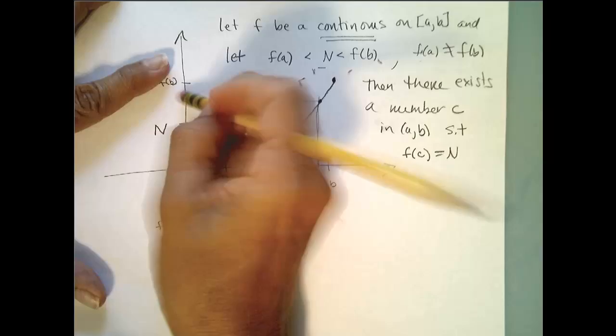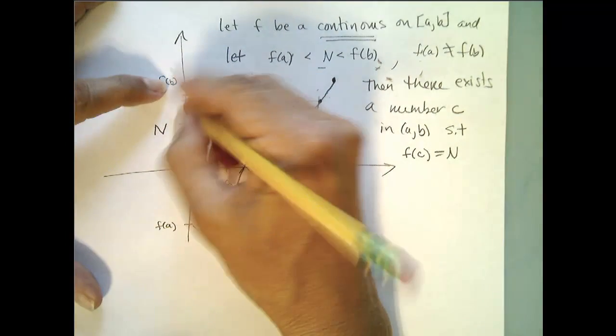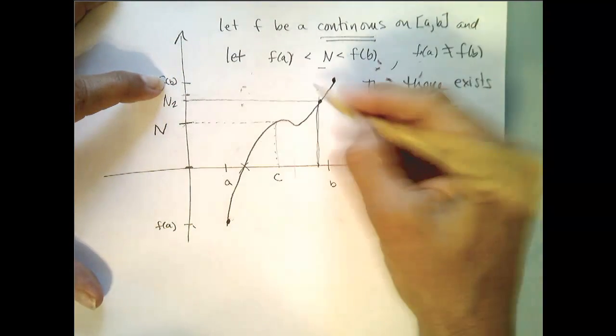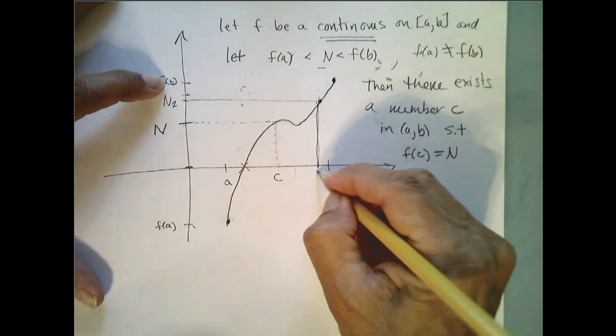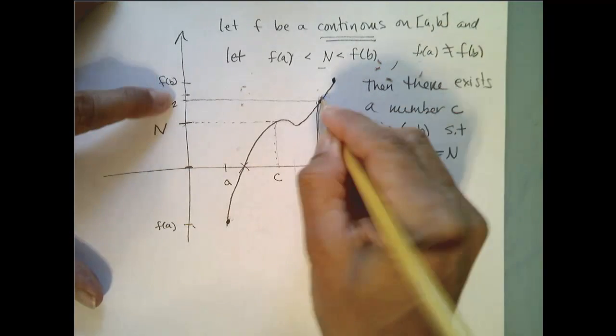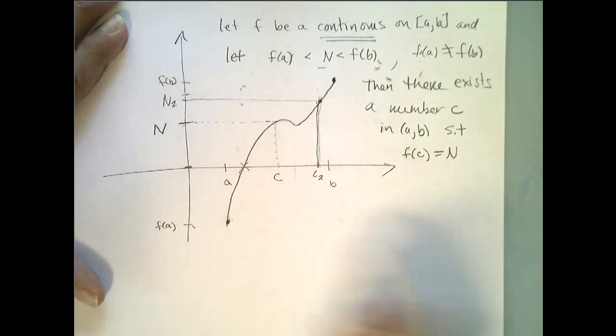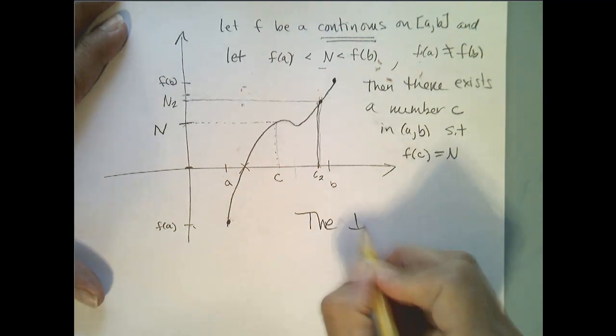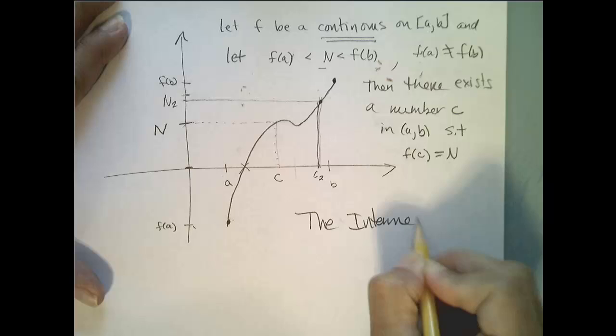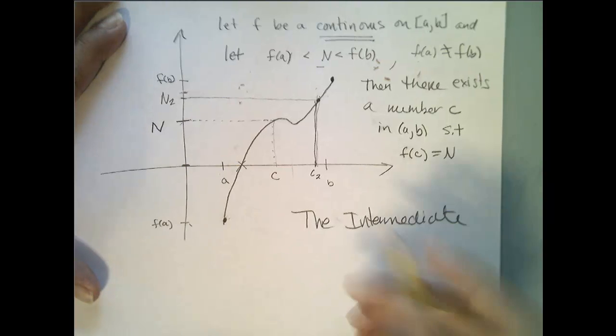So no matter which value you choose between f of a and f of b, we'll call this n2, I'm going to be able to find a value, we'll call this one c2, such that f of c2 gets mapped to n2. That is the intermediate value theorem.